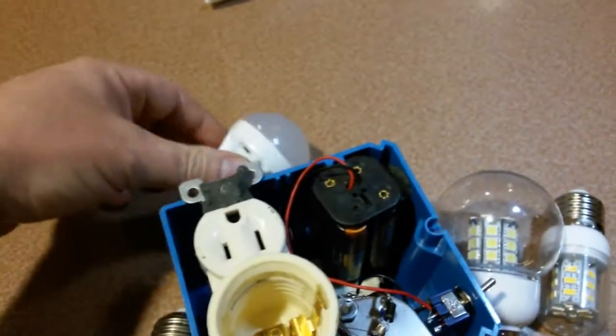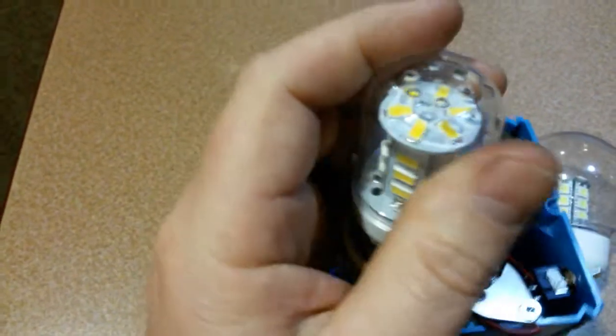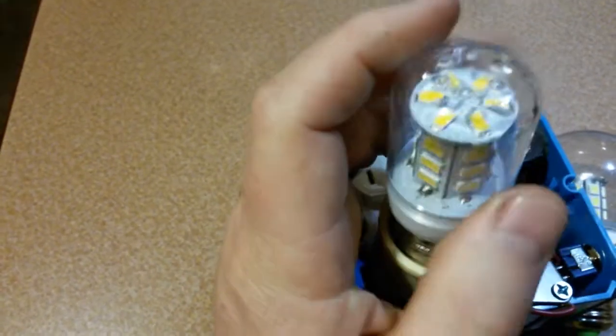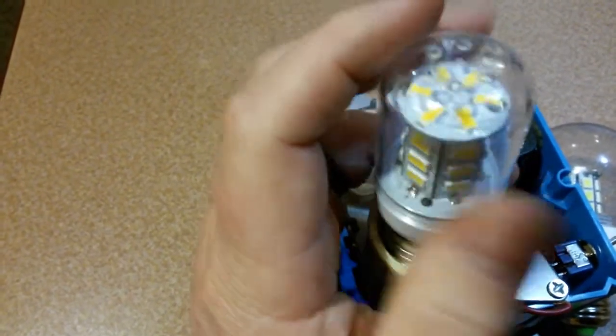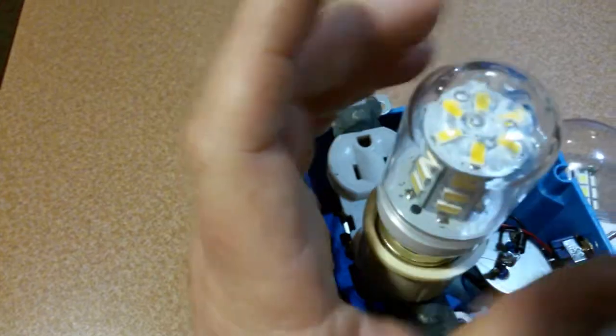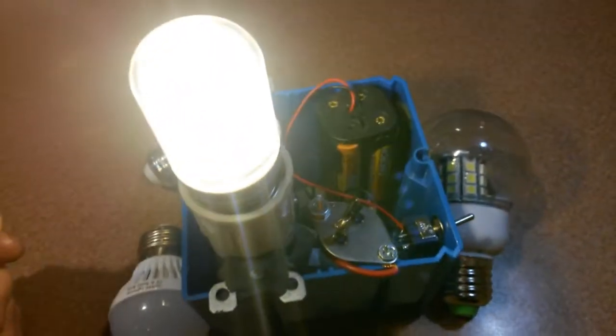Then we've got the standard corn light. This is the yellow type lights, called a soft white. It's a yellow color, soft white.